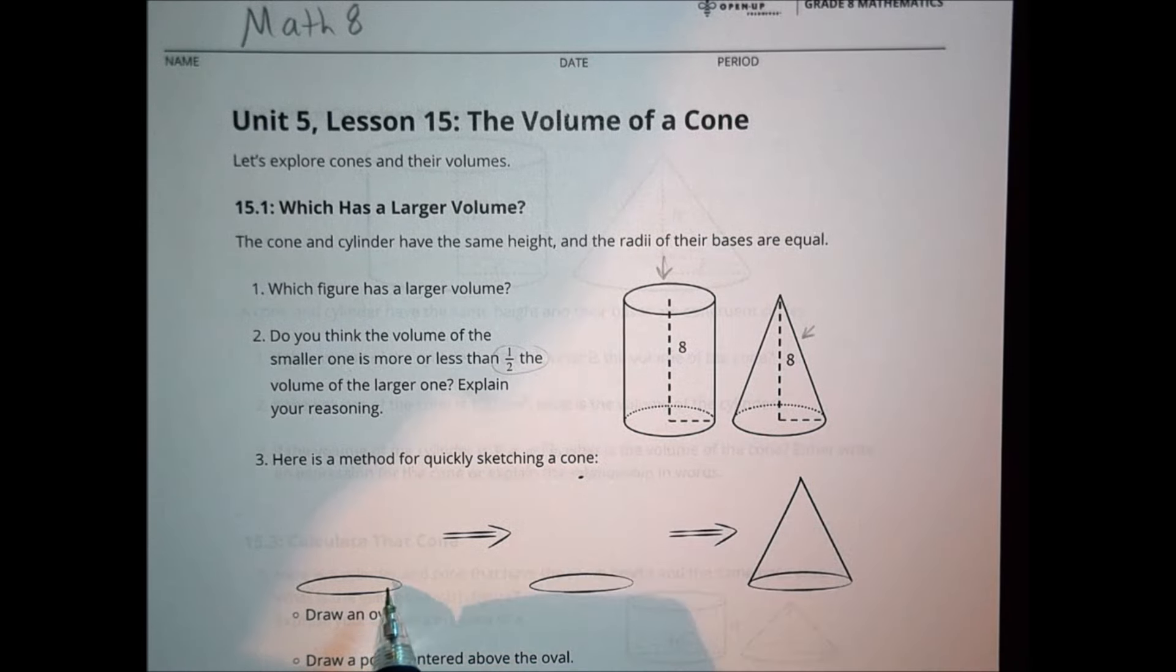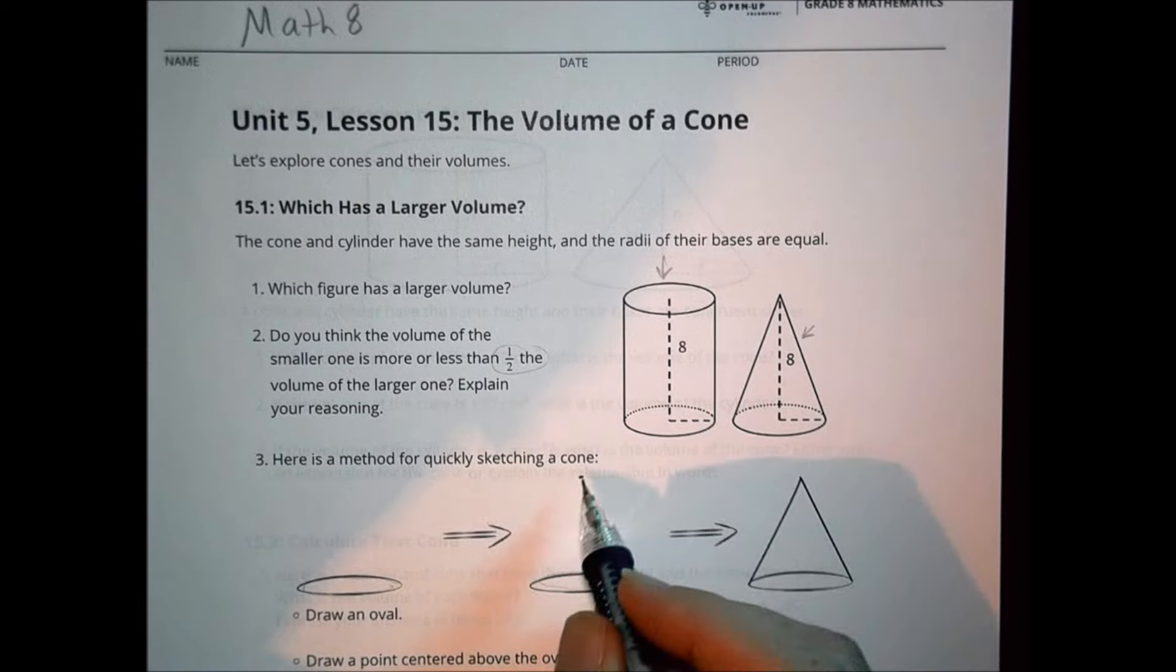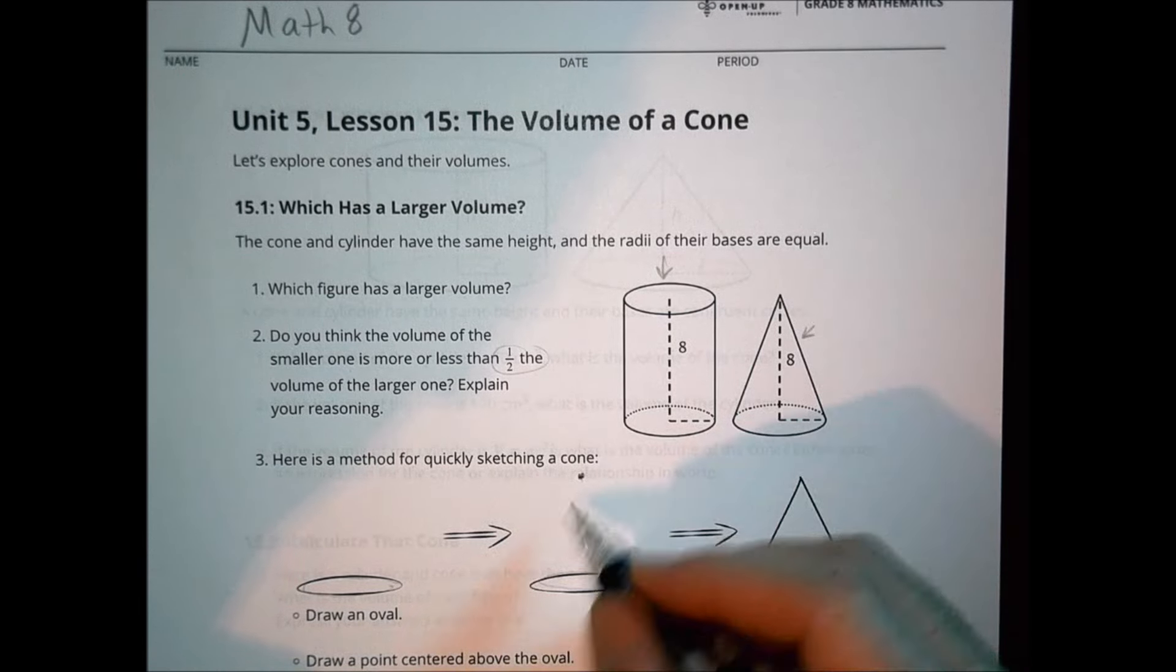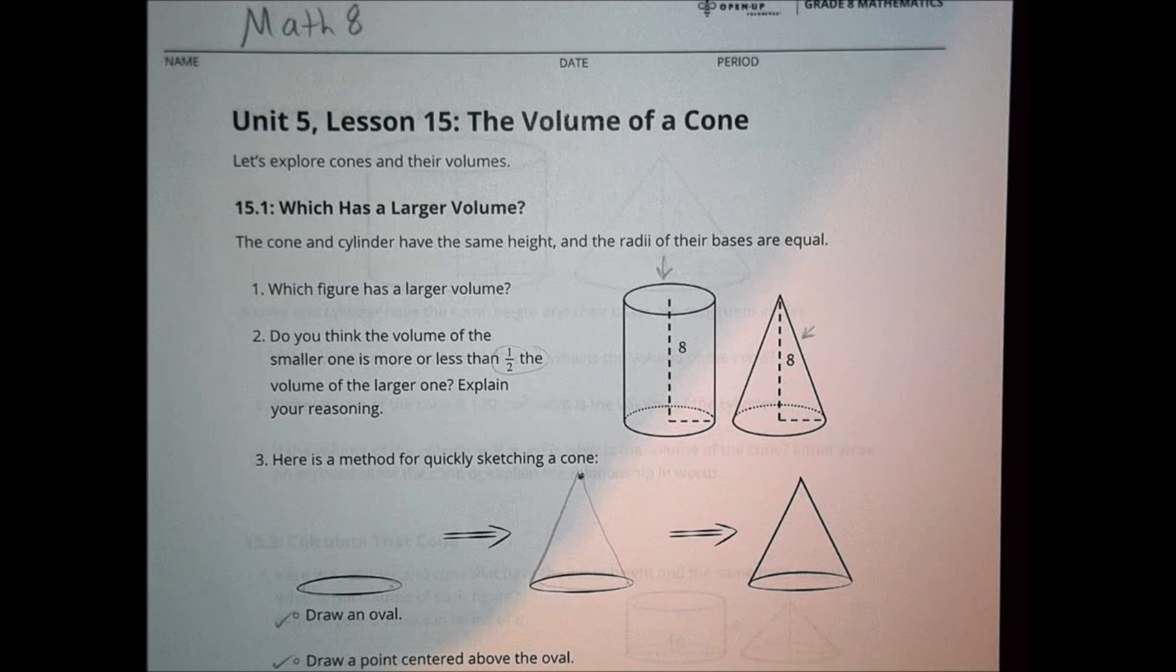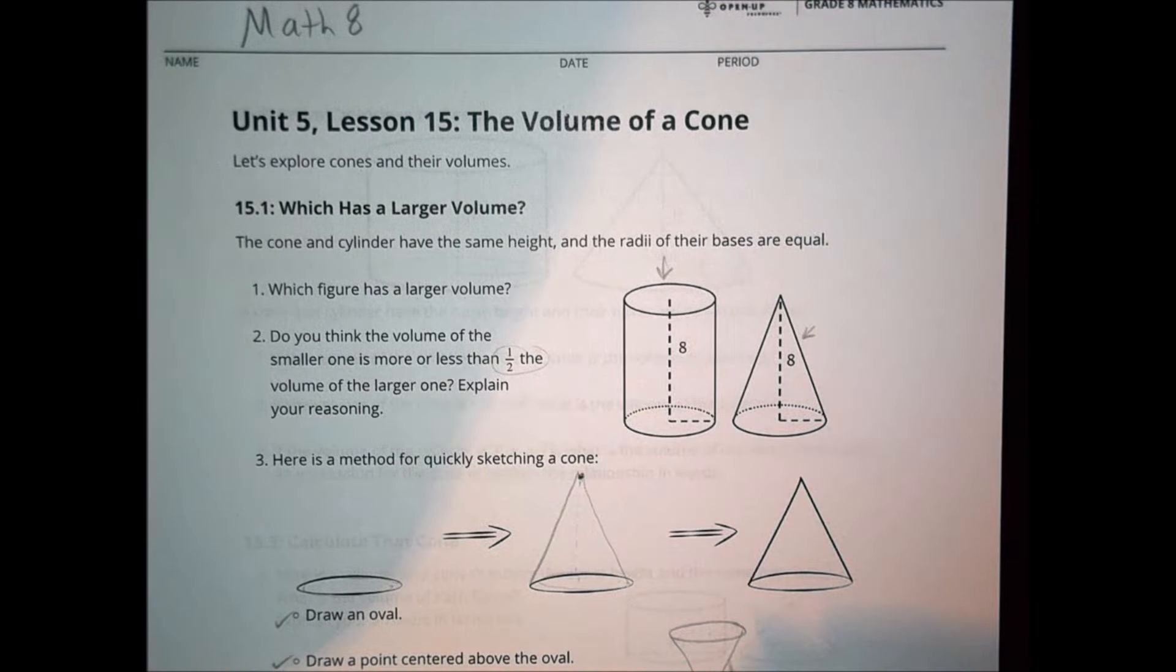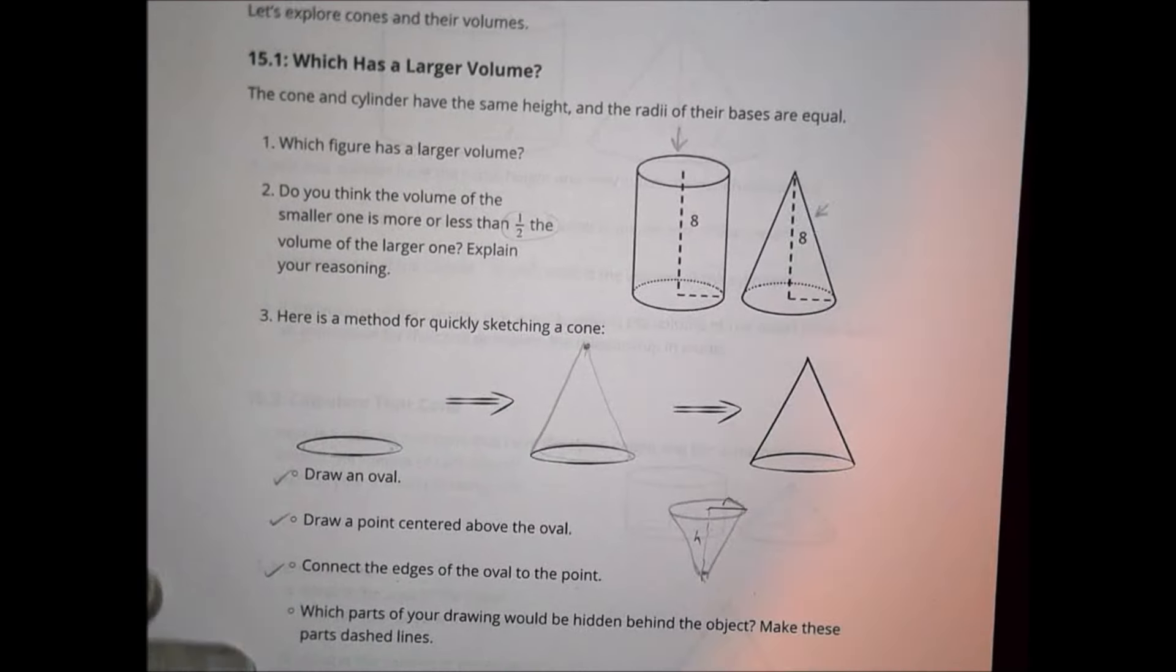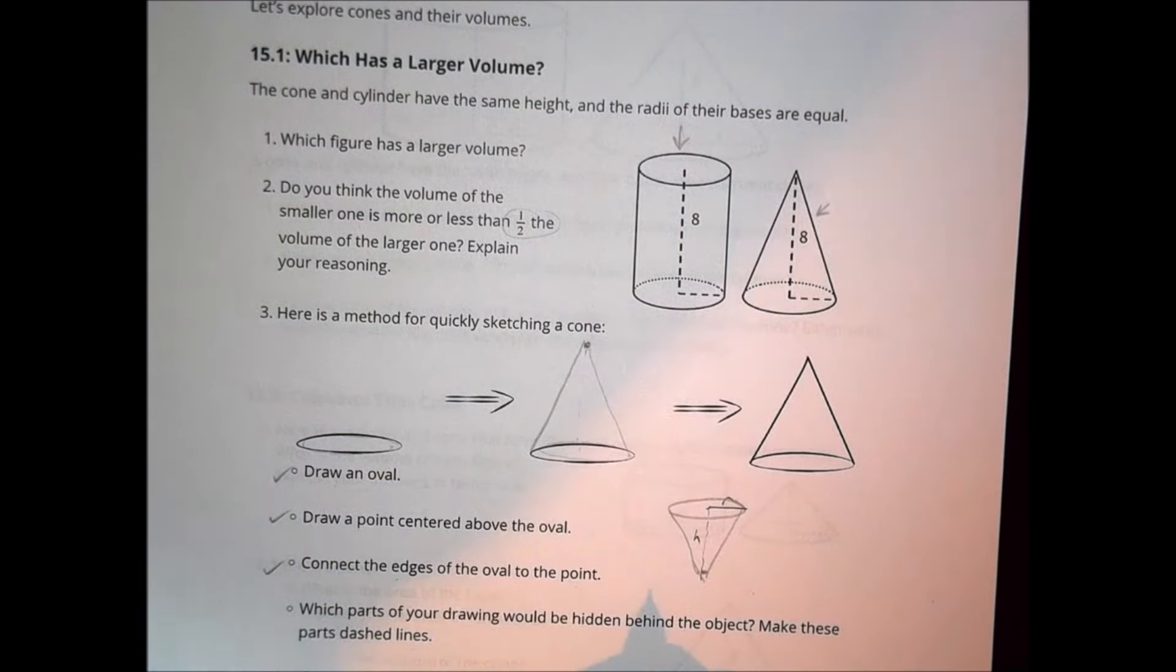Here's a method for quickly drawing and sketching a cone. The first thing you want to do is draw an oval. Then draw a point centered above the oval. And then you connect the edges. So draw the oval, draw a point above, connect the edges. Which parts you're drawing would be hidden behind the object? Make these parts dashed. Maybe if you had a height inside, you wouldn't see it. You might not see the backside of the circle there. So you just draw an oval, pick a point right above it in the middle, and then connect your dots to make the cone.